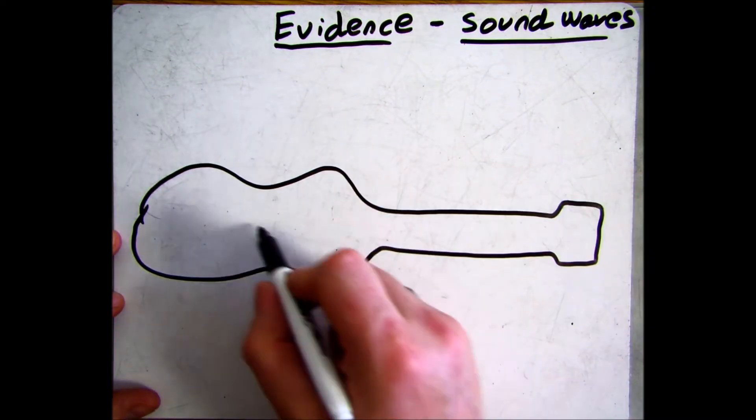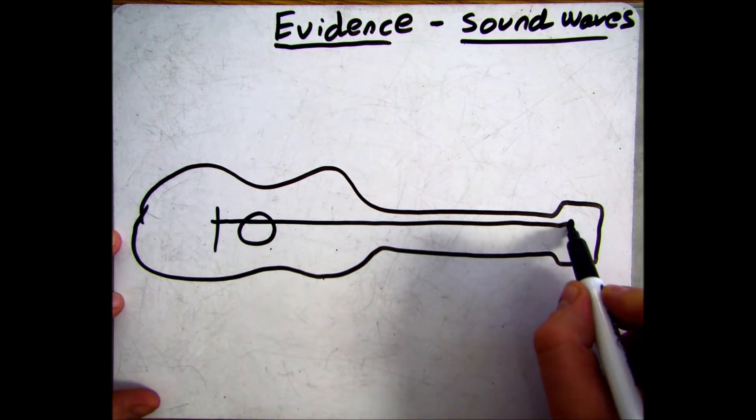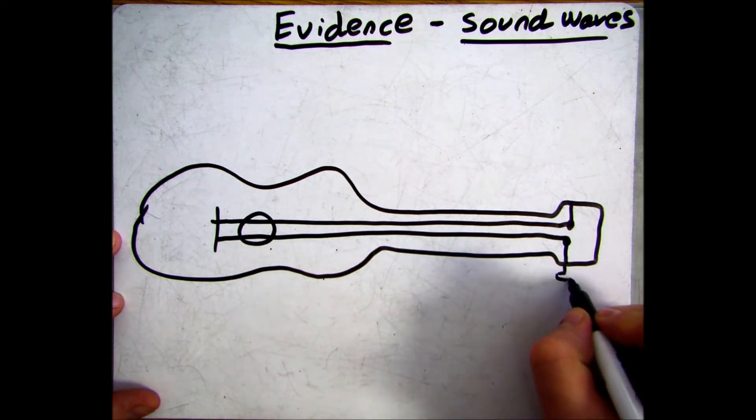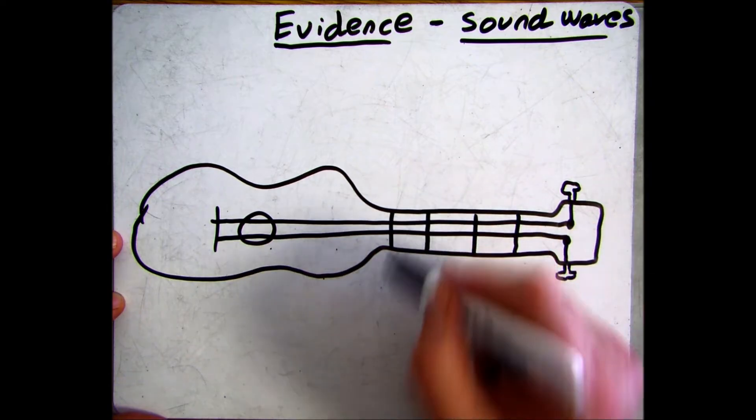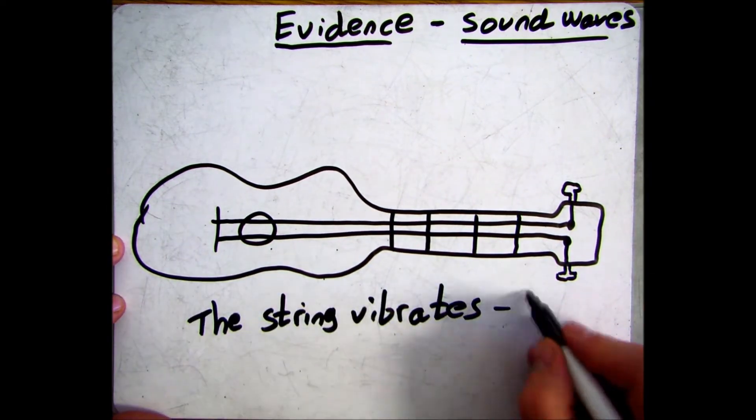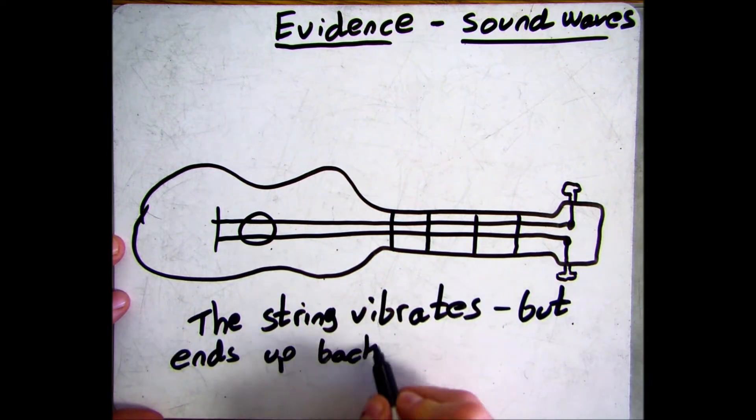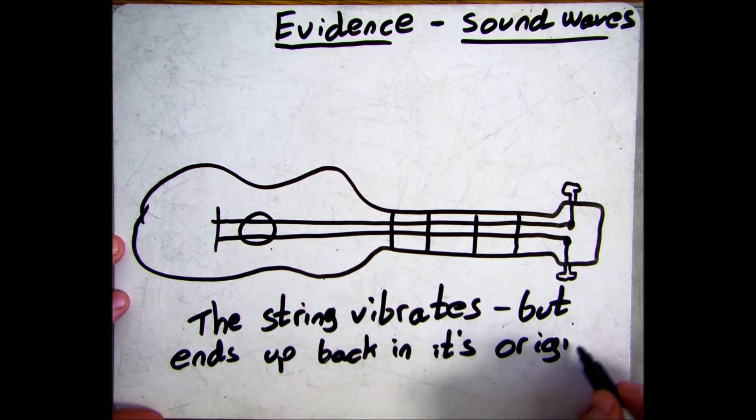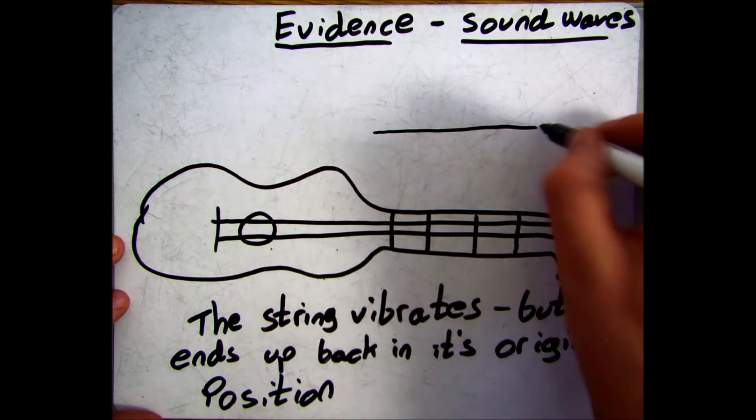You'll be expected to be able to do this for sound waves, so the example we're going to look at here is a guitar string. As the guitar string is plucked, the string will vibrate back and forwards. It will transfer energy and information to the surrounding air particles, but the string will end up back where it started from.